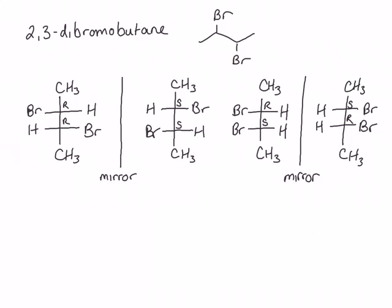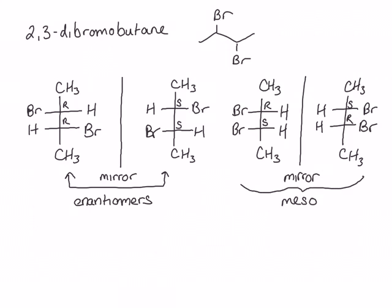Now take a moment and determine if each of these molecules is chiral or achiral. The first two structures are non-superimposable mirror images — they are enantiomers and they are chiral. The second two structures are mirror images of one another, but they are superimposable. Because they contain chiral centers, this is a meso compound. These molecules contain an internal mirror plane of symmetry and are achiral.